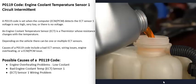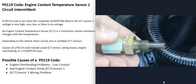One possible cause of a P0119 code is a problem with the engine itself — overheating or low coolant. The coolant flows past these ECT sensors, so if the coolant level is low, that can throw the sensors off and cause problems. Usually if the engine is overheating it's fairly obvious — the engine might be running badly. Keep in mind that an overheating engine can also throw these sensors off.